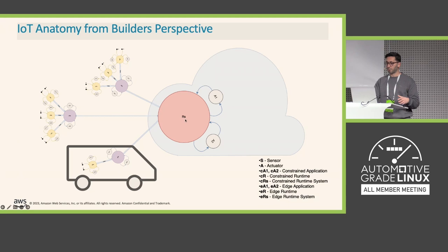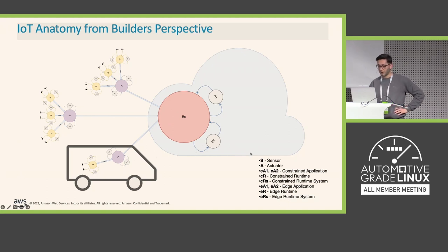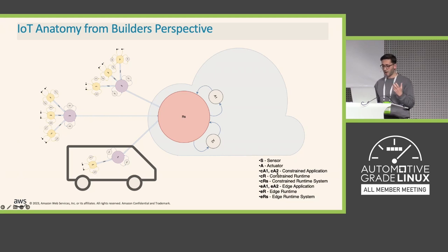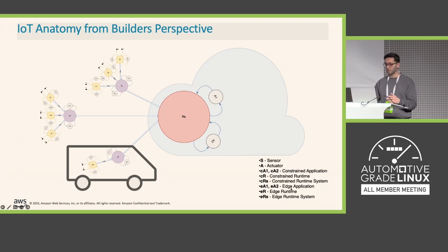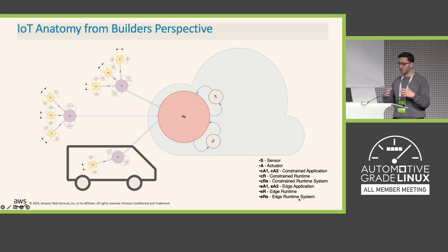What I just described not only applies to industrial or consumer electronic type projects, but also automotive — one of those configurations can easily be a car. You can have sensors, actuators, and constrained applications — think AutoSAR and those kinds of constrained environments. Then you can have edge applications running some kind of operating system with a memory management unit and an edge runtime. Inside a car, we can also have multiple ECUs as well.